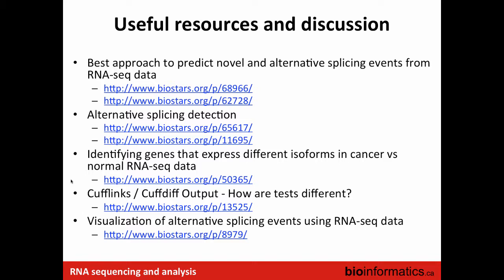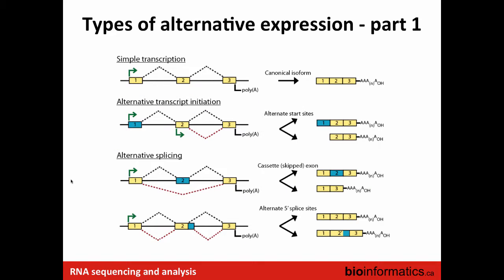Resources cover best approaches for detecting alternative splicing, identifying genes that express different isoforms in cancer versus normal RNA-seq data, discussion of Cufflinks and Cuffdiff output differences, and tools for visualizing alternative splicing events. The next two slides show some of the classic patterns of alternative splicing.